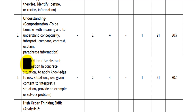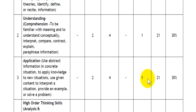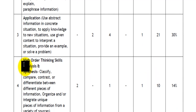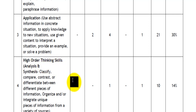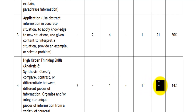Then there are questions based on application. There will be 2 two-marker questions, 4 three-marker questions, and 1 five-marker question, also totalling 21 marks with a weightage of 30%. There is also a question based on high order thinking skills at a higher level of difficulty. There will be 2 very short answer questions of 1 mark each, 1 three-marker question, and 1 five-marker long answer question totalling to 10 marks.